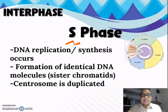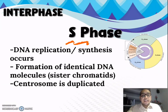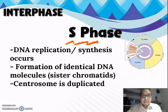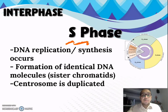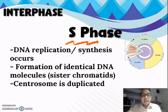The second phase is the S phase, or synthesis phase, where DNA replication or synthesis occurs. The formation of identical DNA molecules — also known as sister chromatids — also happens, and the centrosome is duplicated.